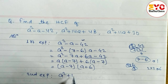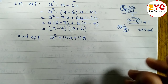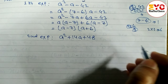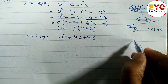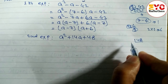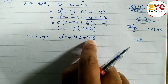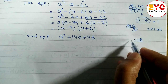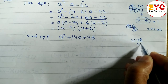Now look at the second expression: a squared plus 14a plus 48. Here also we have to factorize this expression. We write 48 and need to find factors whose multiplication is 48 and addition is 14.